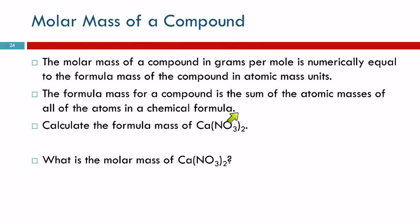So let's calculate the formula mass of calcium nitrate. So this is the formula for calcium nitrate. This is an ionic compound. It doesn't have molecules. There's one calcium and two nitrogens and six oxygen atoms in this formula unit.